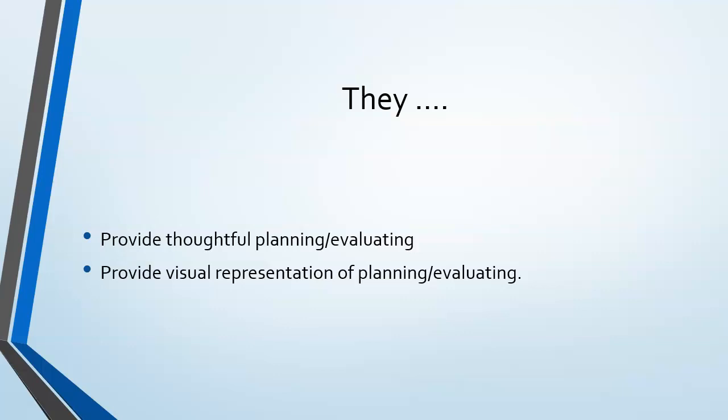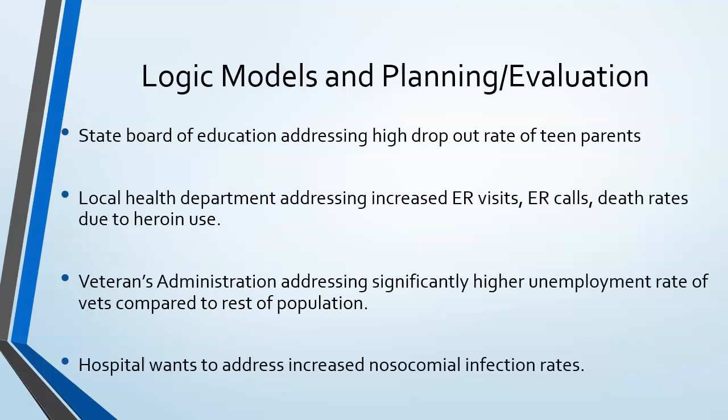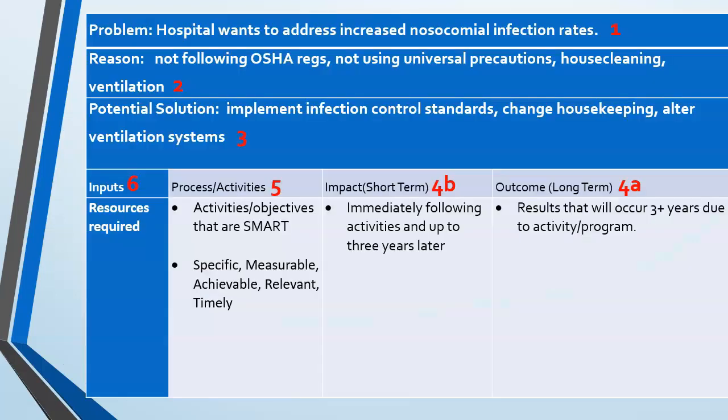In the department, you will most likely be asked to use a logic model. There are all kinds of reasons you could use one — for example, if the State Board of Education wanted to address high dropout rates for teen parents, if health departments were concerned about increased visits due to heroin or other opioids, if the VA was interested in the higher rate of unemployment of veterans compared to the rest of the population, or if hospitals wanted to address the increased rate of nosocomial infections — infections that people get from being in the hospital. These are actually part of how hospitals are ranked by their accrediting body.